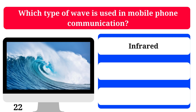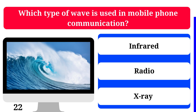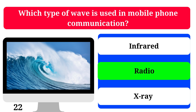Which type of wave is used in mobile phone communication? Infrared, radio, or X-ray? The correct answer is radio.